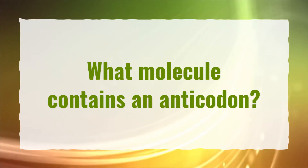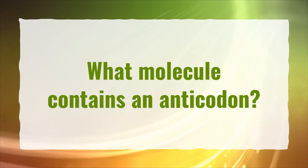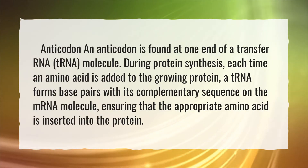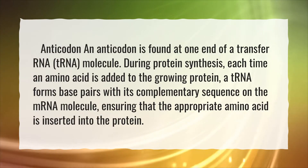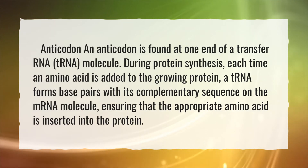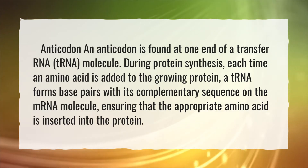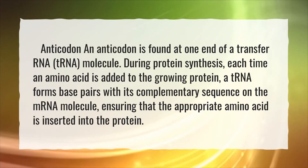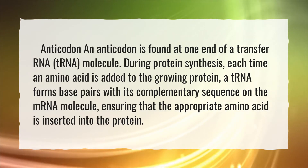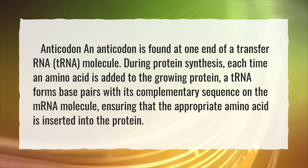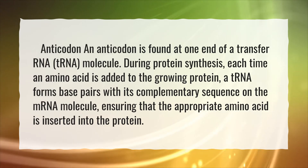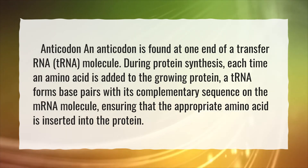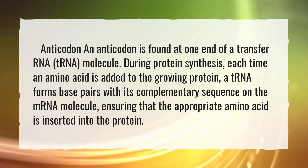What molecule contains an anticodon? An anticodon is found at one end of a transfer RNA (tRNA) molecule. During protein synthesis, each time an amino acid is added to the growing protein, a tRNA forms base pairs with its complementary sequence on the mRNA molecule, ensuring that the appropriate amino acid is inserted into the protein.